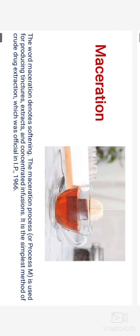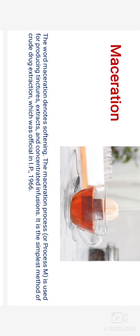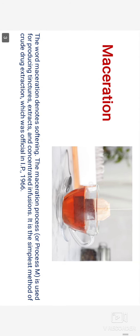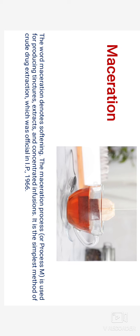In today's video lecture we will discuss about maceration and percolation. The word maceration denotes softening — the best example is tea bags. The maceration process, also called process M, is used for producing tinctures, extracts, and concentrated infusions. It is the simplest method of crude drug extraction, which was officially recognized in the Indian Pharmacopoeia 1966.